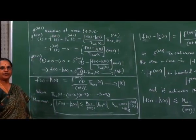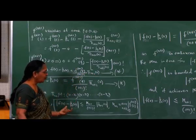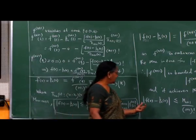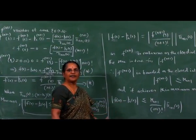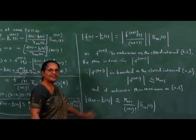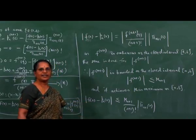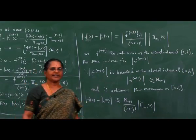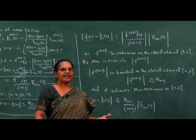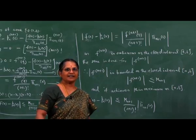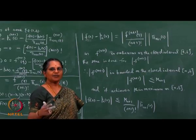So we have been able to show the error in interpolation and an estimate of the size of the bound on the error in interpolation. With the help of this inequality we can provide an estimate on the size of the error bound when we interpolate a given function f(x) by means of an interpolating polynomial of degree at most n. We will look into these details in the next class.